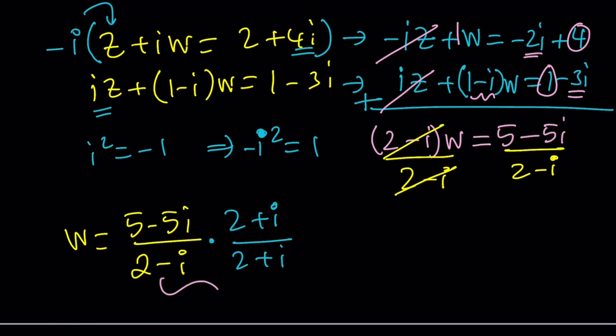So when you multiply these two things, you're going to get sum of two squares. The real part squared plus the imaginary part squared. So what are the real and imaginary parts? 2 is the real part and the imaginary part is 1 or negative 1. It doesn't matter. And you're going to get 5.